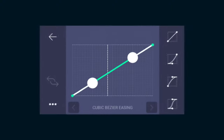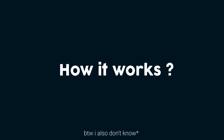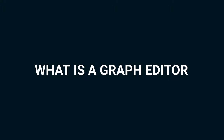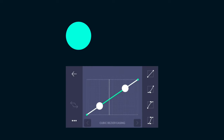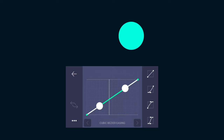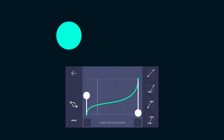In light motion, almost everyone would have come across this thing, and many of you don't know how it works. A graph editor is a tool which lets you control the speed of the animation. Here I have an animation with the default graph, which is a linear curve, and if I change the graph you can clearly see the difference.